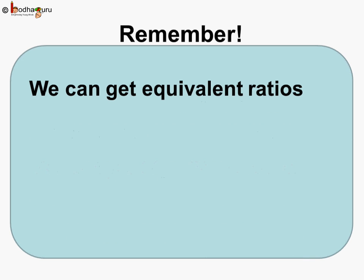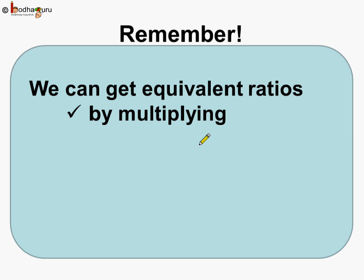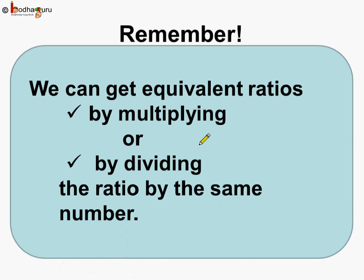Remember, we can get equivalent ratios: first by multiplying, or second by dividing the ratio by the same number. Where the ratio is represented in the form of numerator and denominator of a fraction, both the numerator and the denominator should be multiplied or divided by the same number to get an equivalent ratio.